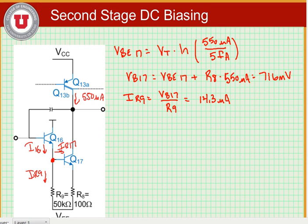We know what the base current flowing into Q17 is, because we know what the collector current flowing into Q17 is. So we know IB17 is equal to 550 microamps divided by beta, which is equal to 2.2 microamps. We're assuming that the beta for an NPN transistor in this process is 250, and for a PMOS we will use 50.